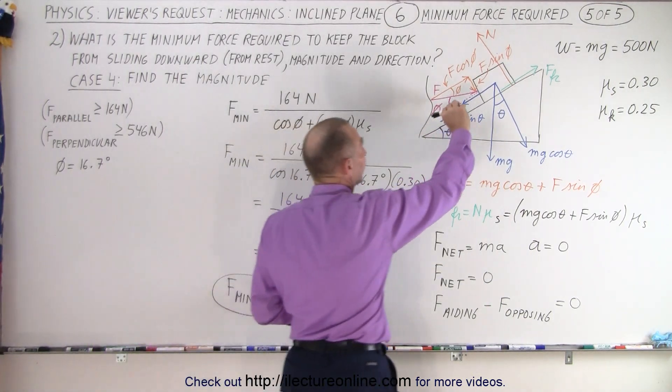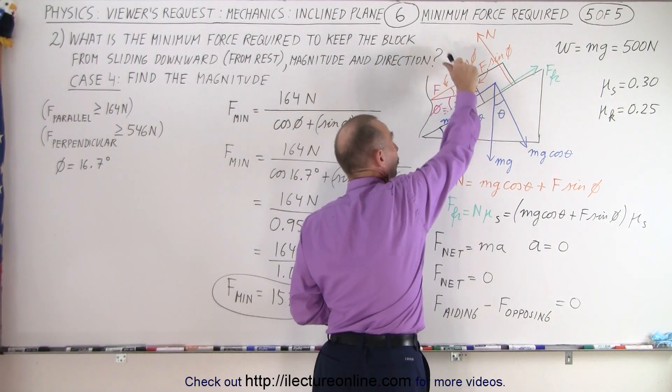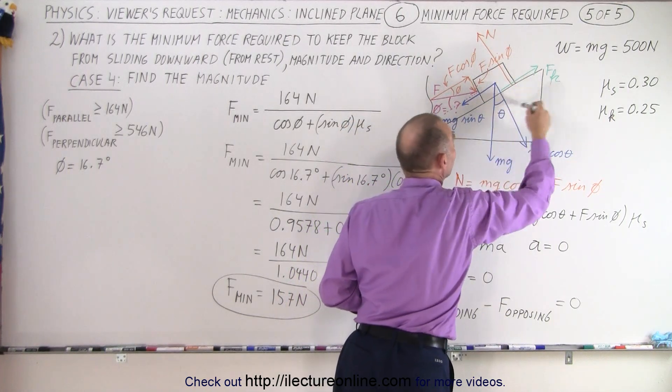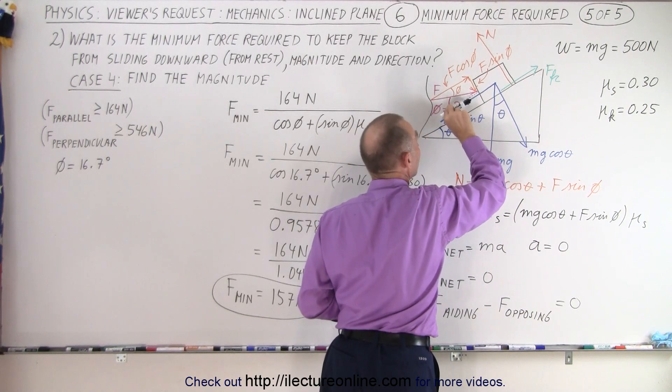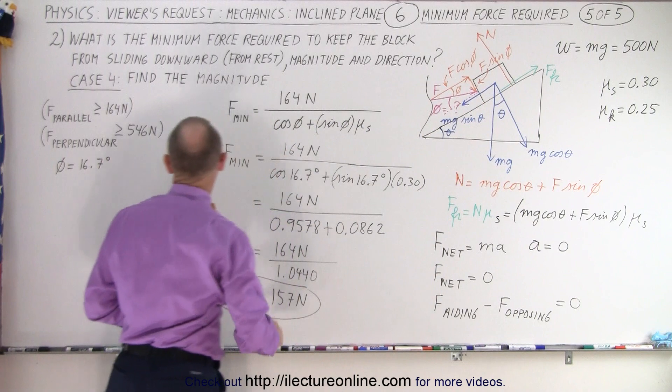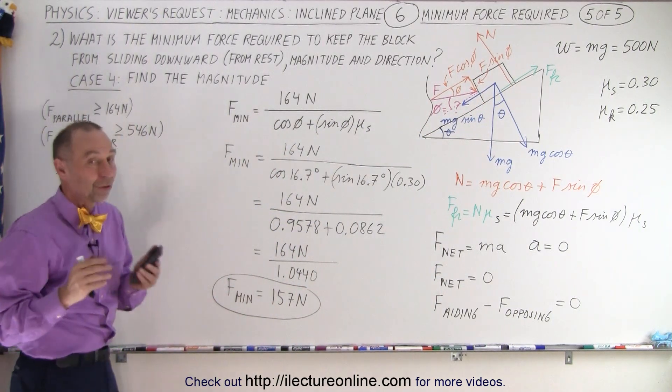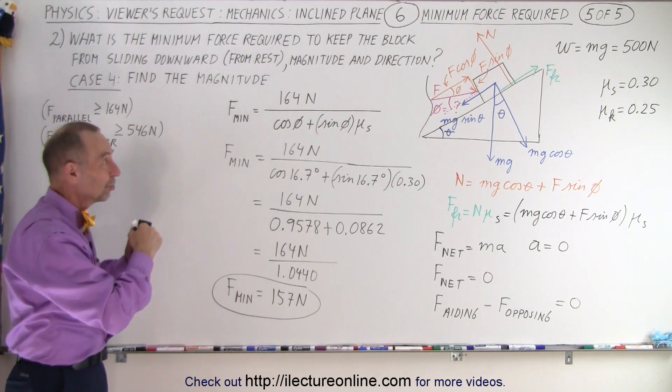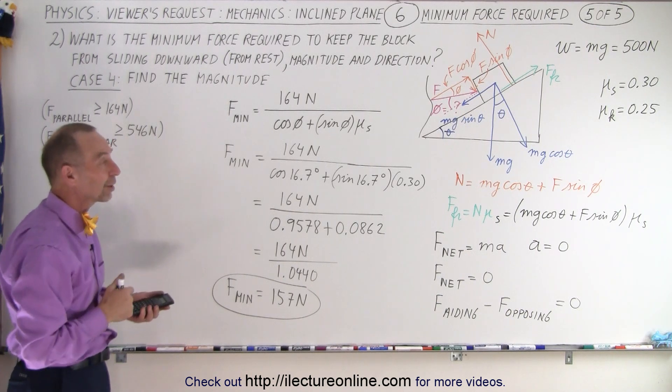In other words, if the angle is sufficiently large, the additional component of the force now that's pushing perpendicular to the incline will then add enough to the friction force that coupled with the component parallel to the incline of this force together will be greater or have more of an effect than the 164 Newtons. And so therefore, you need less force to accomplish the same thing, meaning to accomplish not allowing the block to slide down the incline.